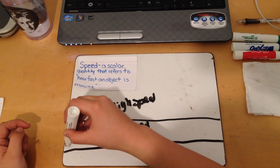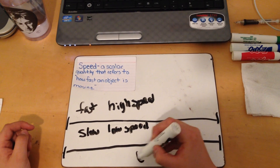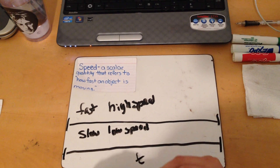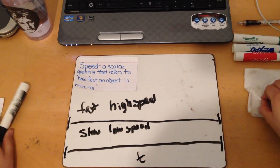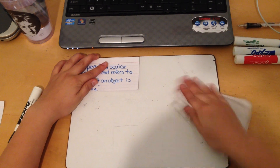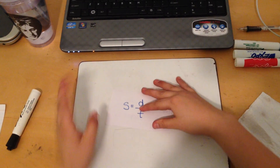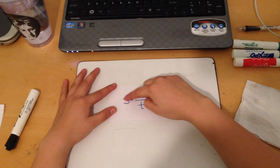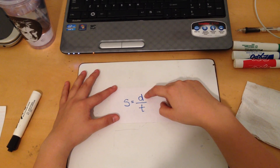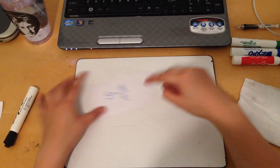I want you to notice how it could be the same distance, but what matters here is time. That's what's going to be the big difference. Let's go over the formula for speed, which is speed is equal to distance divided by time.